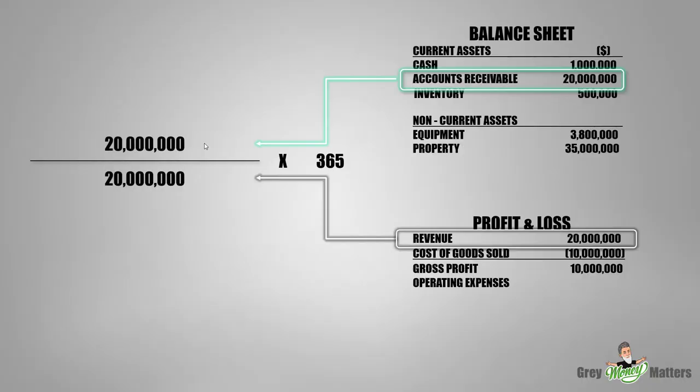Now let's look at an unfavorable situation. Let's say we recorded 20 million dollars worth of credit sales throughout the year, and none of our customers had paid us anything throughout the year for all the products or services we had sold or provided. As you can see, we would have a ratio of one — based on the 20 million dollars worth of average accounts receivable compared to the 20 million dollars worth of revenue. We would then multiply the ratio by 365 to convert to days. As you can see, we get an uncomfortable situation of 365 days, which basically indicates that we didn't collect a single dollar for 365 days. This would be a difficult situation for any small business to survive.